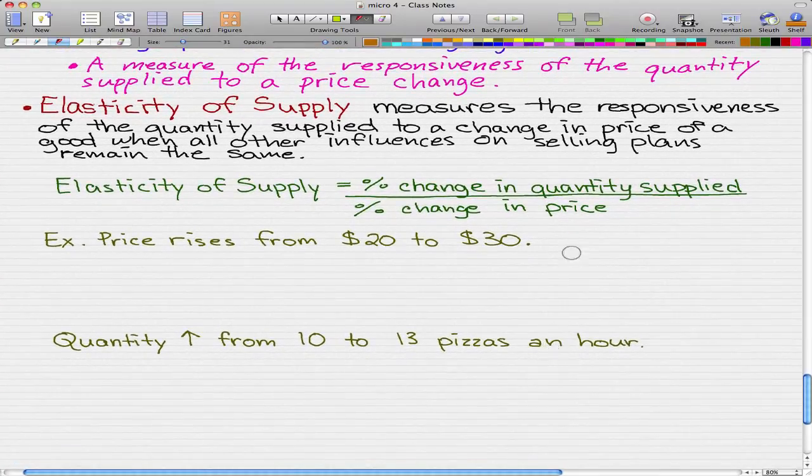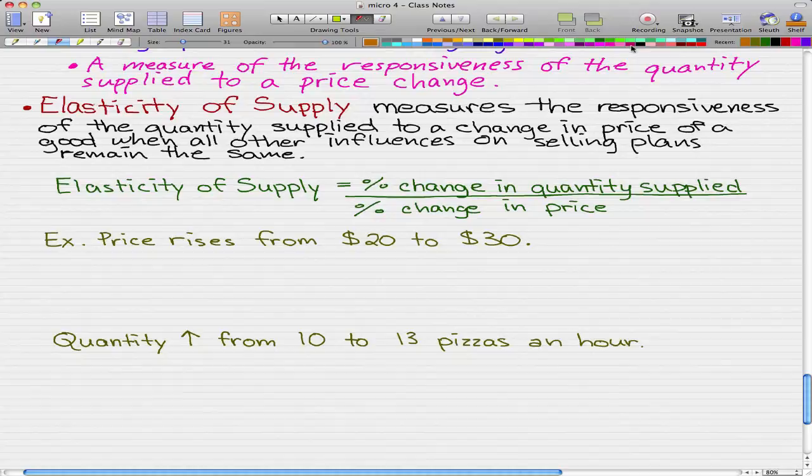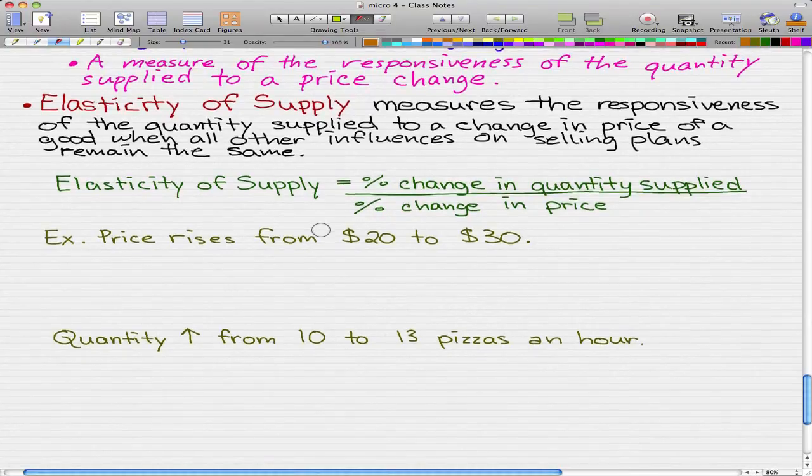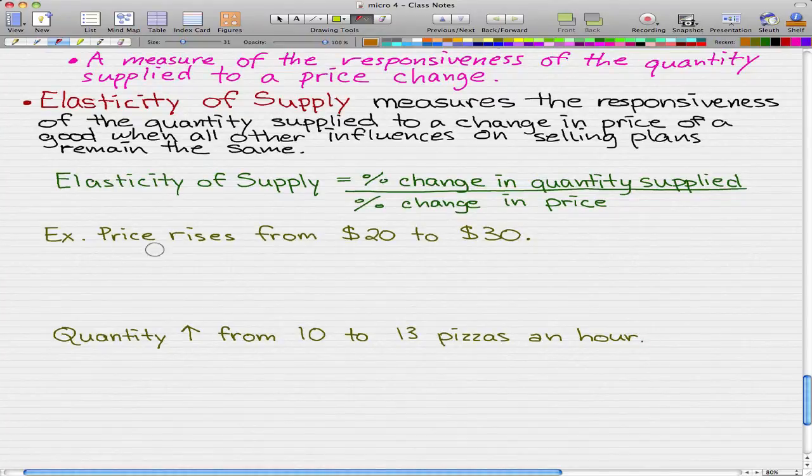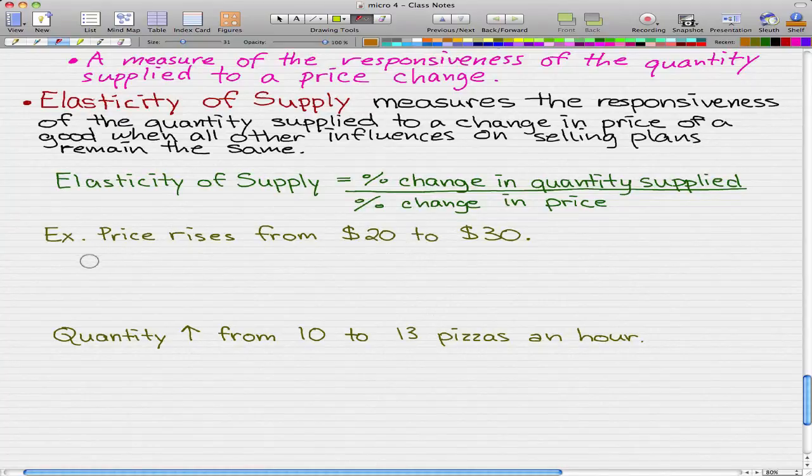Let's just go through an example to really help us understand how this new elasticity of supply works. Price rises from $20 to $30. Let's just go through this.